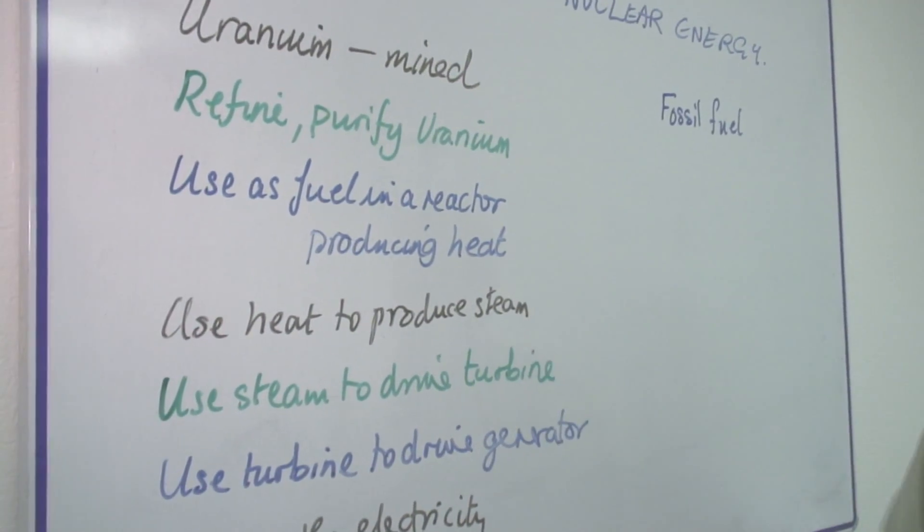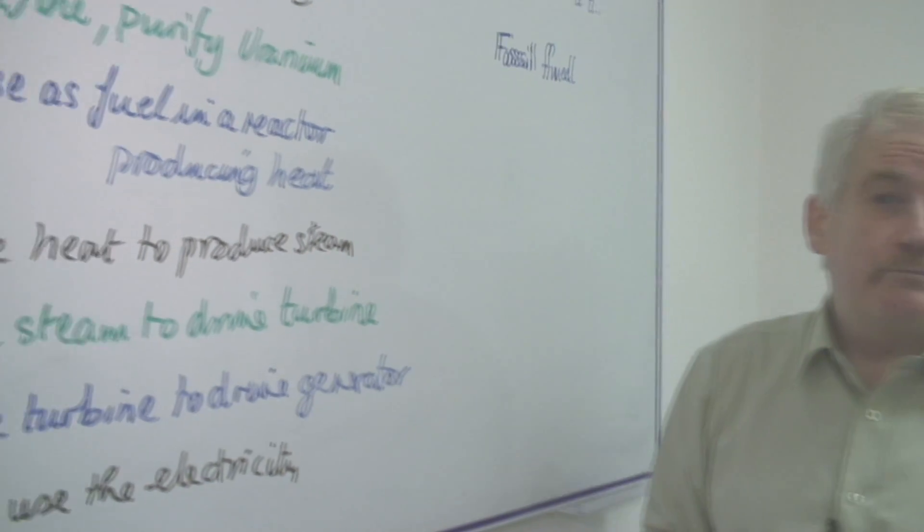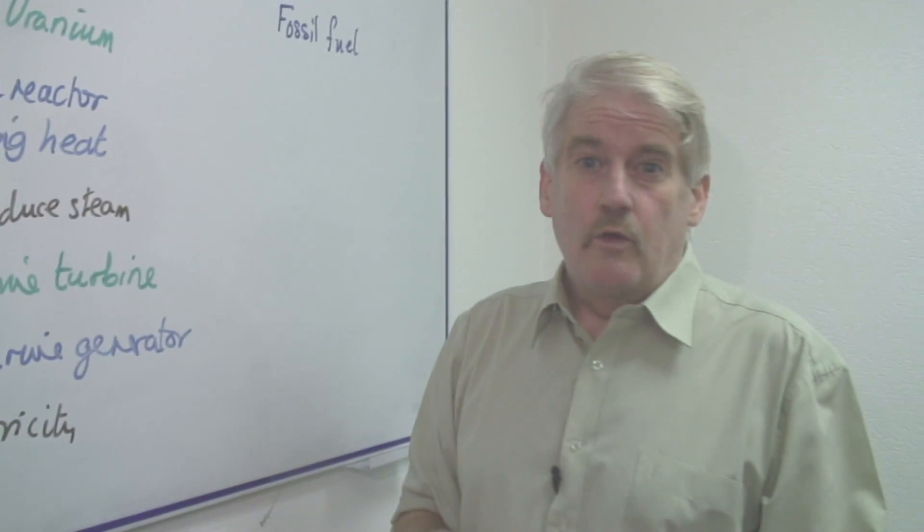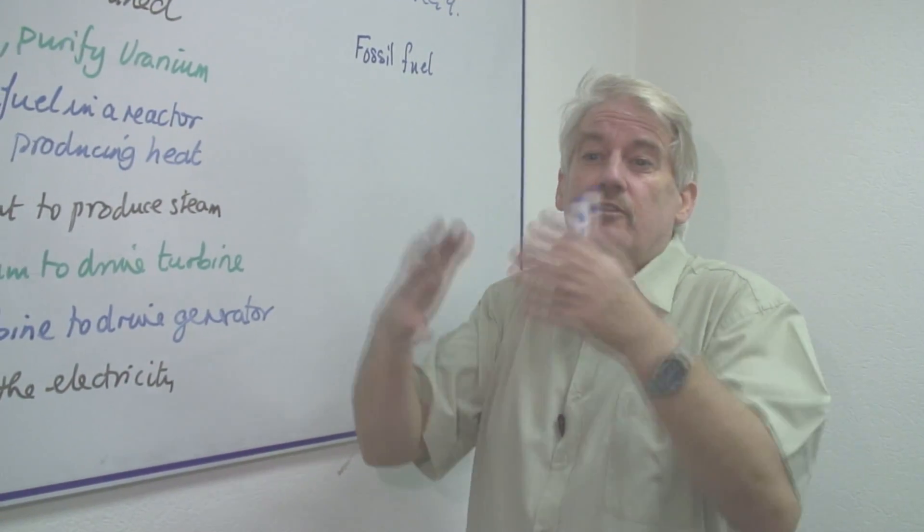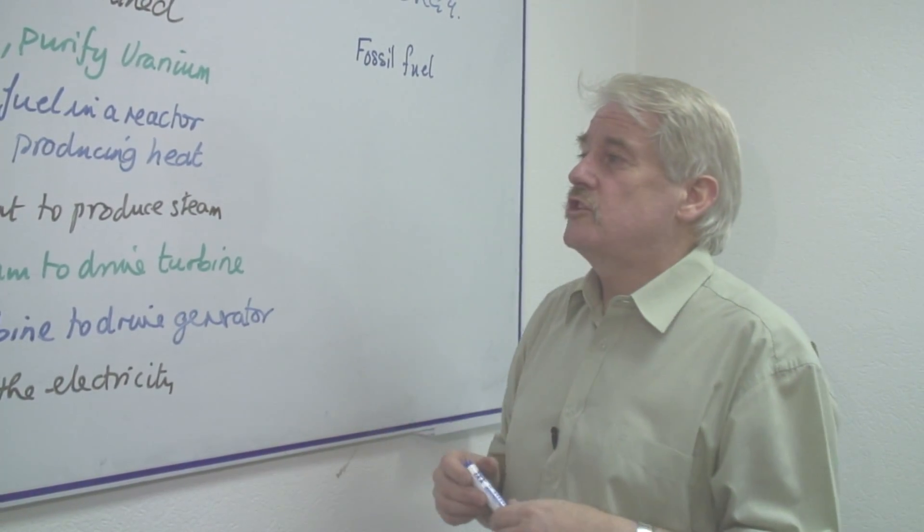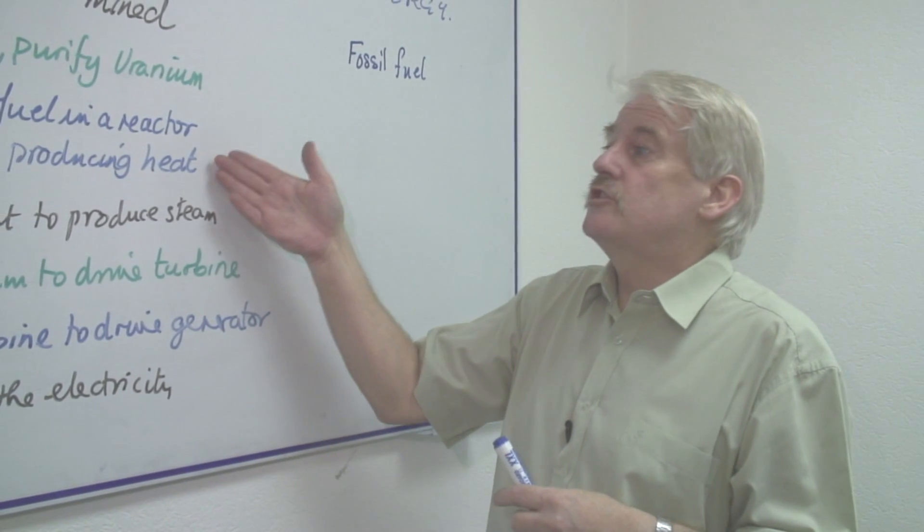Now the fuel in the nuclear reactor has one function, basically to get hot. When uranium comes close to another block of uranium, if there's enough of it, we get what's called a chain reaction and this produces heat.